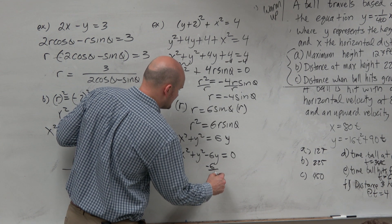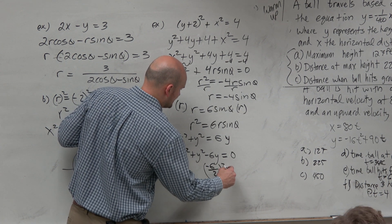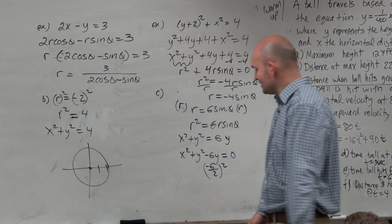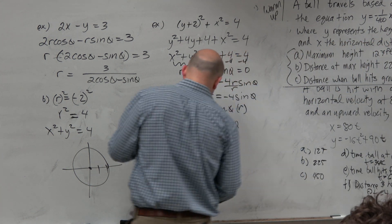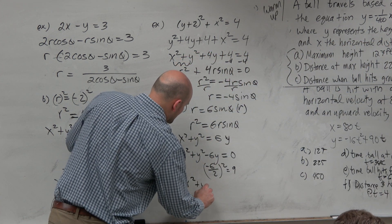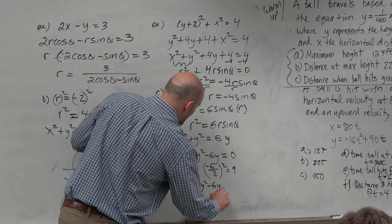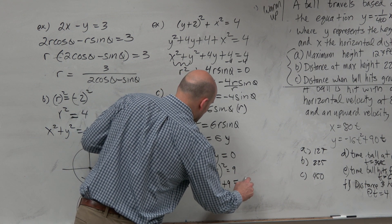So if you guys thought completing the square was done, guess what? It's back. Negative 6 divided by 2 is 3. 3 squared is 9. So therefore, you have x squared plus y squared minus 6y plus 9 equals 9.